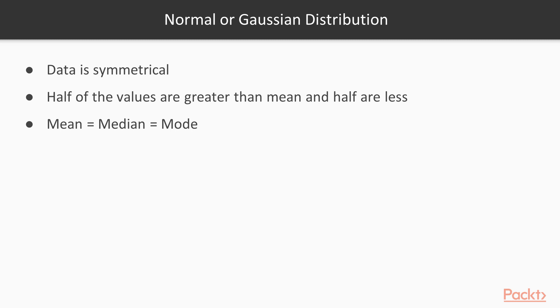Normally distributed data is symmetrical. Half of the values are greater than the mean, and half of the values are less than the mean. The mean, median and mode of normally distributed data are also equal.